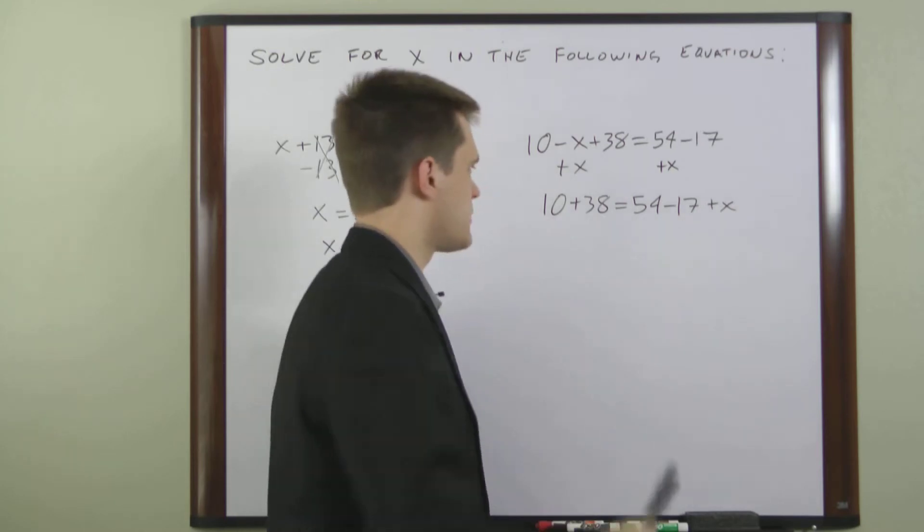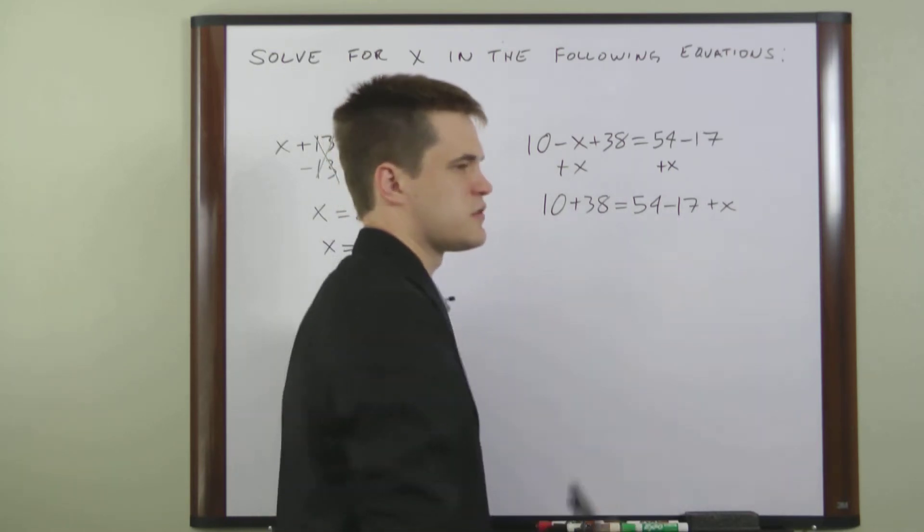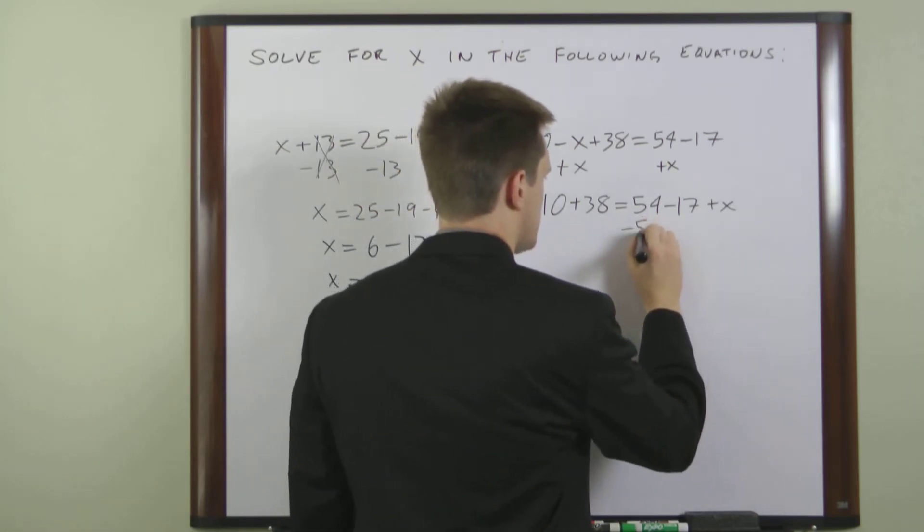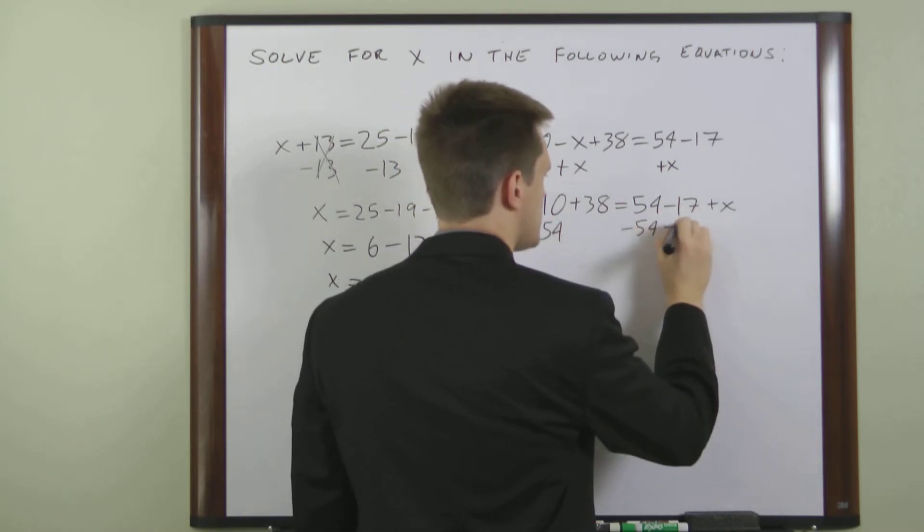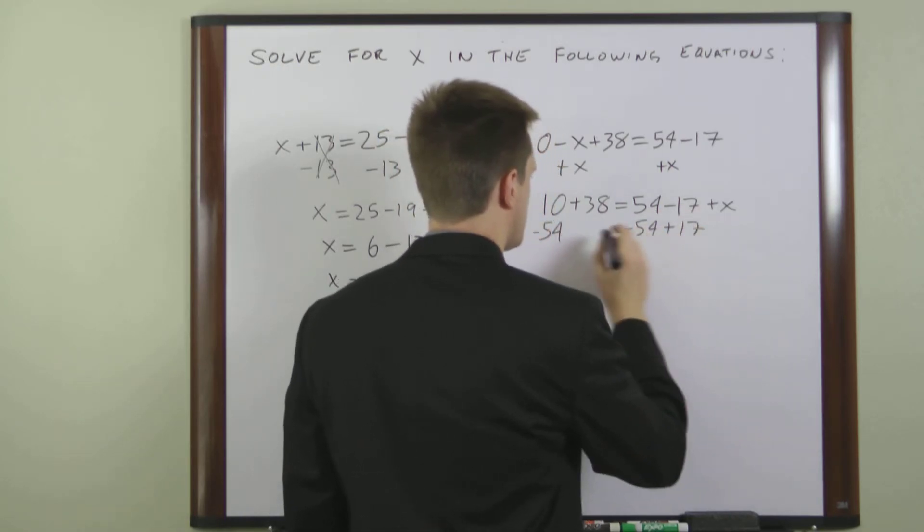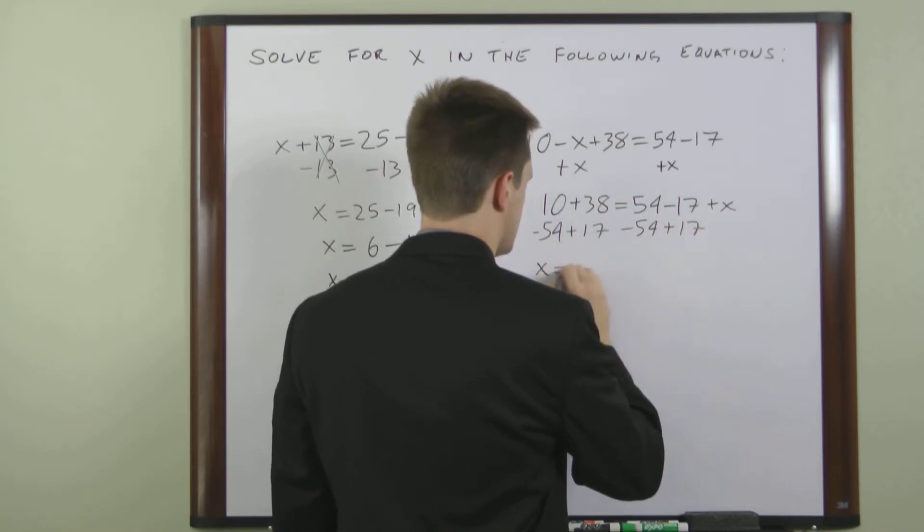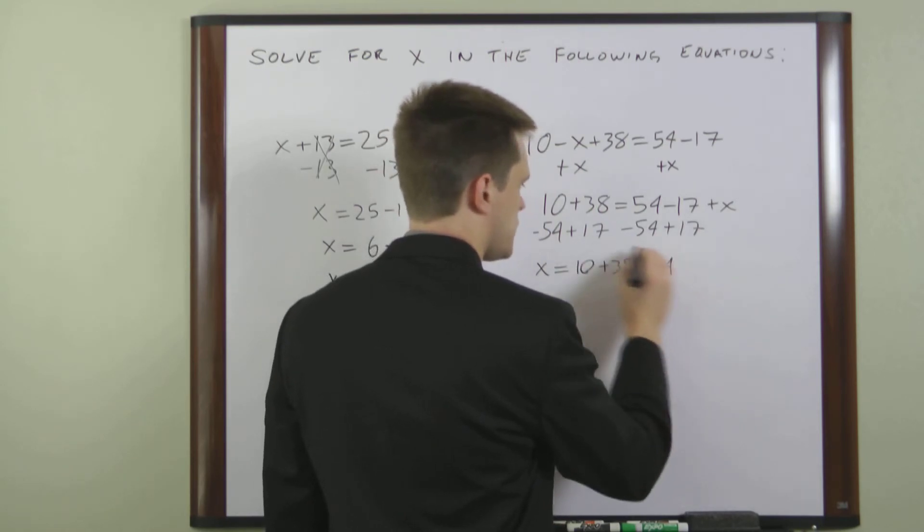Okay, the next step is going to be to move these numbers over to this side so that x is over there by itself. So we need to subtract 54 from both sides and add 17. So what we have now is x equals 10 plus 38 minus 54 plus 17.